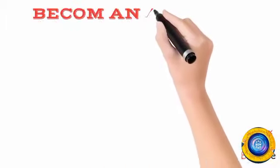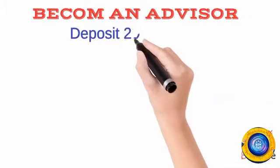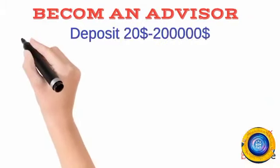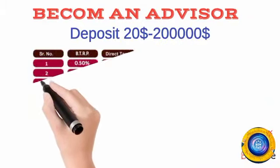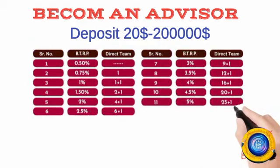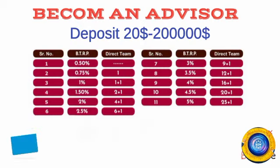First level to 11 level VTR is 0.50% to 5%. Direct team second level to one to 26 direct, and direct team one to 26.